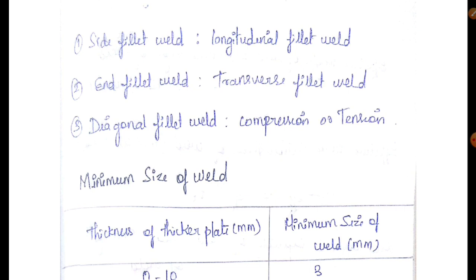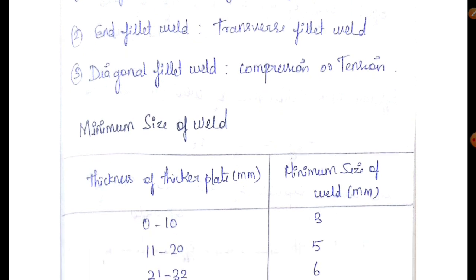This is longitudinal fillet weld — that is the side fillet. End fillet weld carries transverse force. If it is diagonal fillet weld, it will act in compression and tension forces. So side fillet key point: longitudinal fillet is on the side; end fillet is transverse; diagonal fillet carries compression or tension forces.